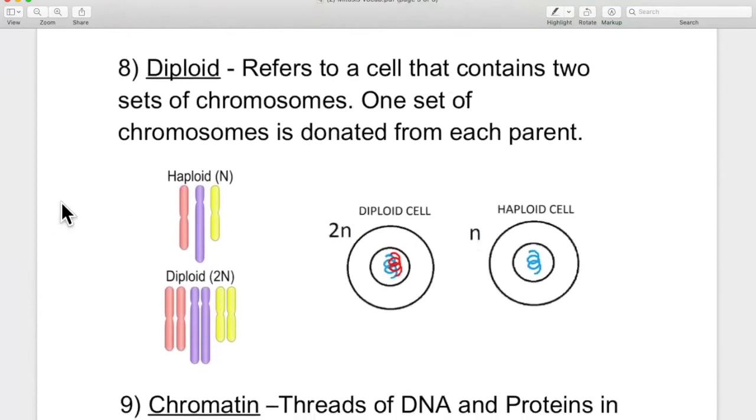Number eight, this word is diploid. I have also heard it pronounced diploid. Either one is fine. I prefer diploid because it sounds like an insult and it's fun to say. A diploid refers to a cell that contains two sets of chromosomes. One set of chromosomes is donated from each parent. Like I said earlier, you have two sets of DNA. Your mom gave you a set and your dad gave you a set. So your dad gave you DNA that says what color your eyes are. Your mom gave you DNA that says what color your eyes are. They may not agree with each other. We'll talk about who wins in a future chapter. But you have two sets.